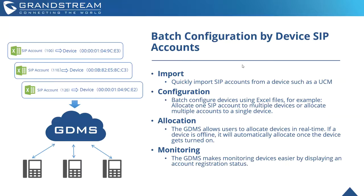When it comes to allocation, you can actually allocate devices in real time with the GDMS. So if the device is offline, it will automatically allocate those SIP accounts once the device gets turned on. The GDMS can basically make monitoring those devices easier and display account registration statuses, so if there's ever any issues, you'll be fully aware of that.